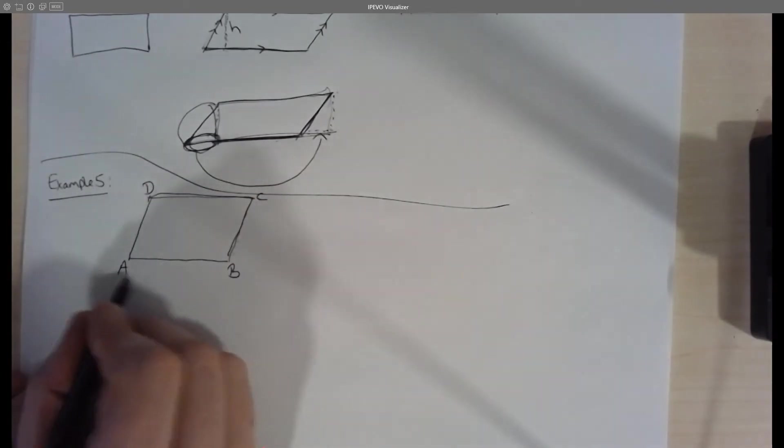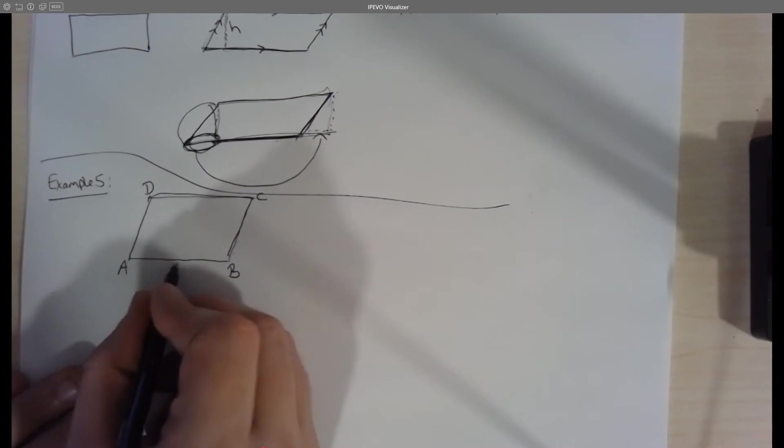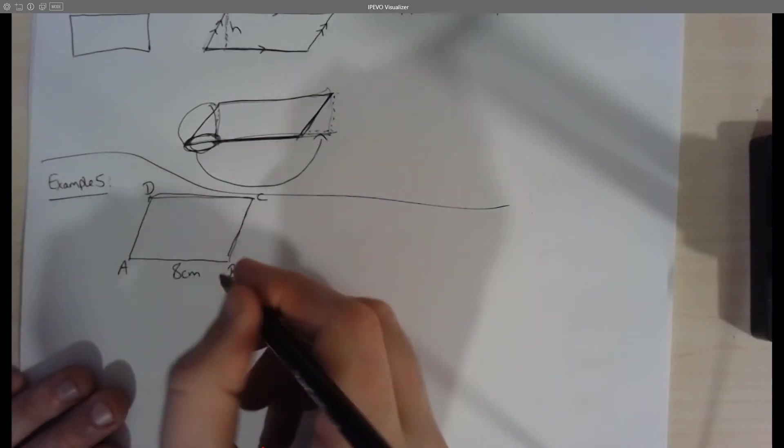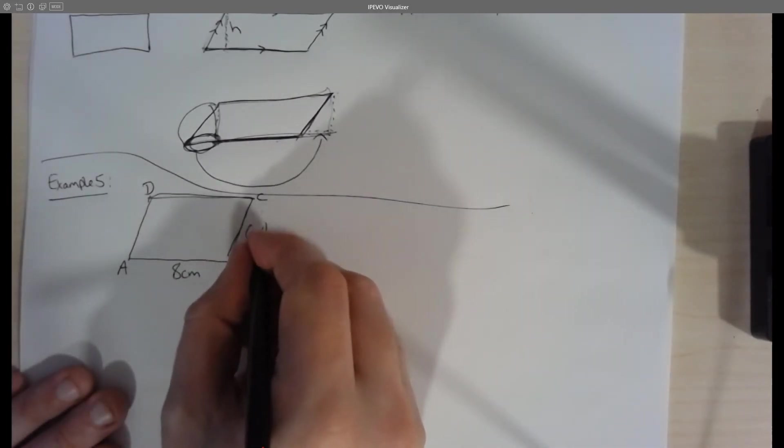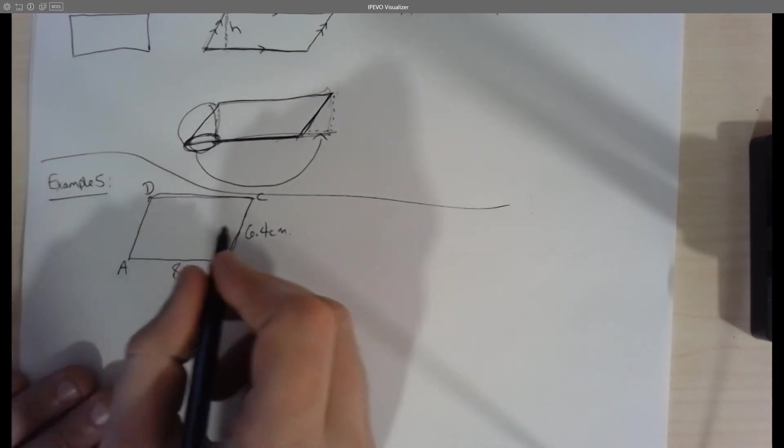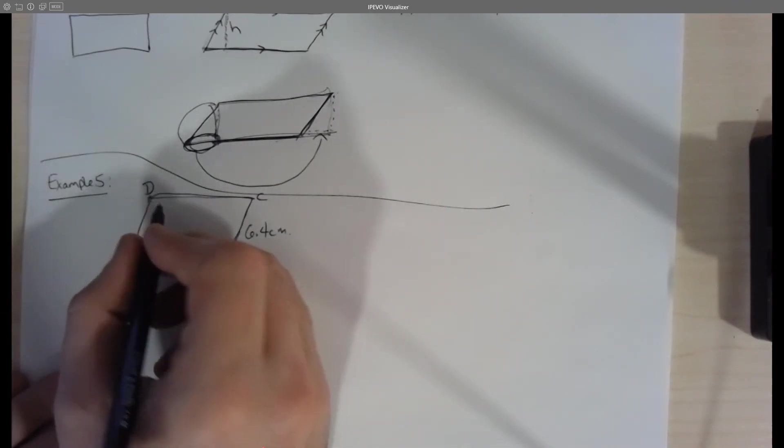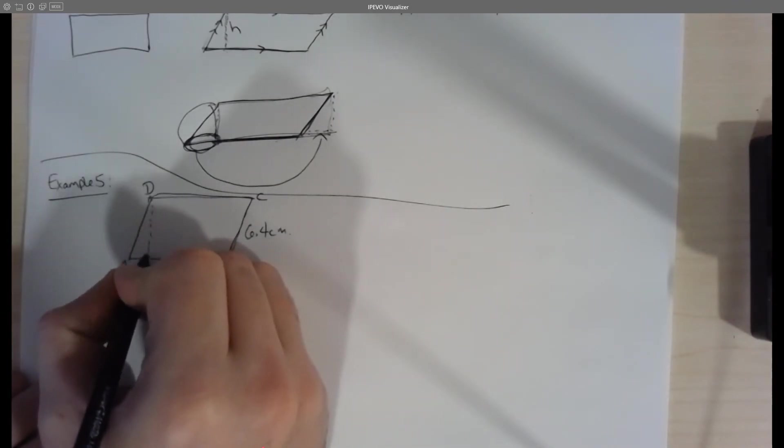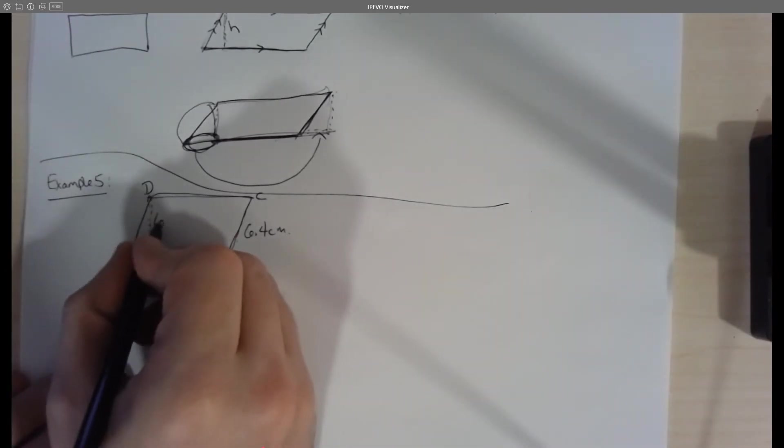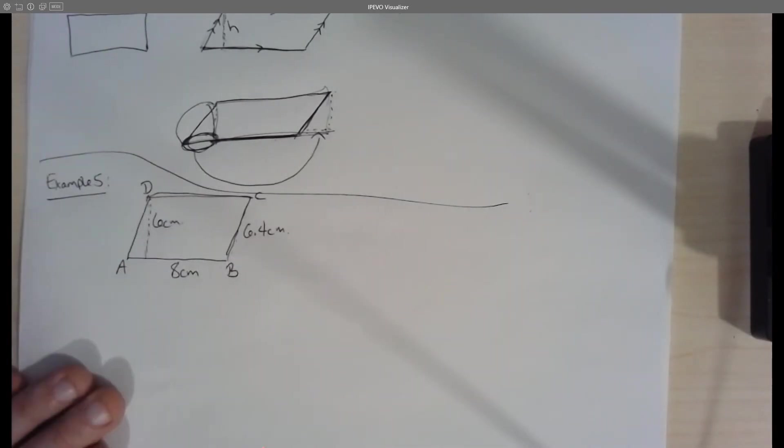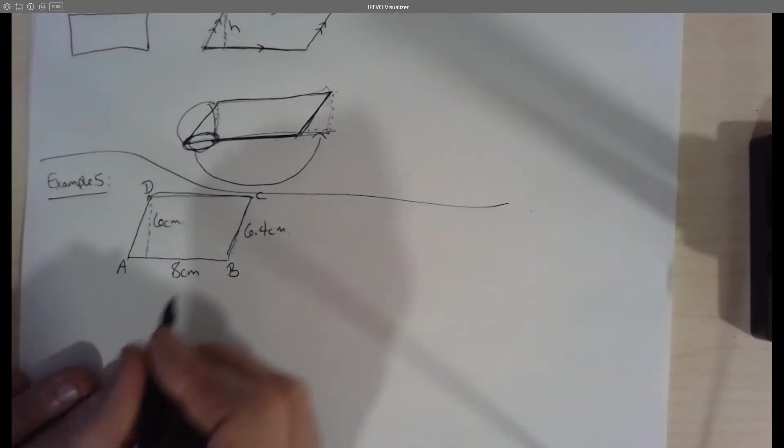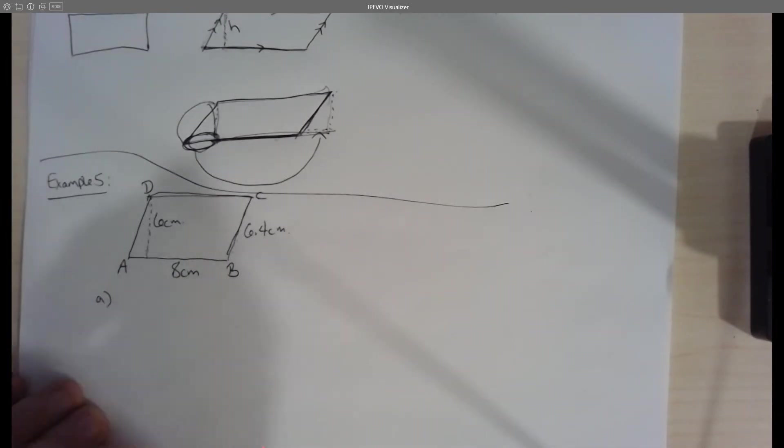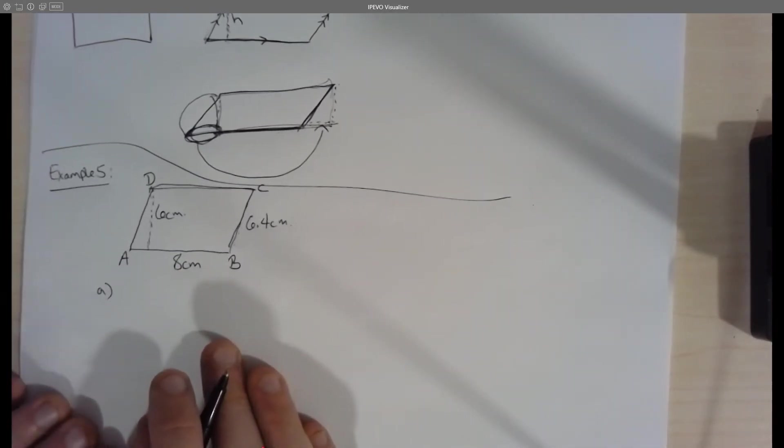It tells us that AB is eight centimeters long, that BC is 6.4 centimeters, and that we also have D to E, which is this special dotted line here is 6 centimeters.